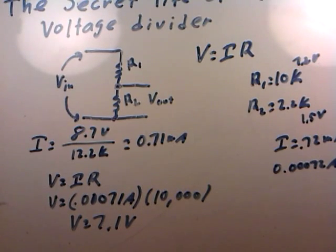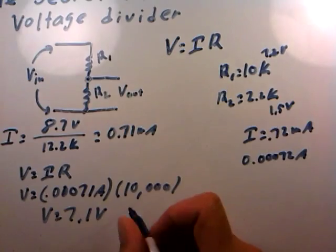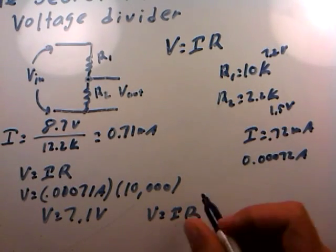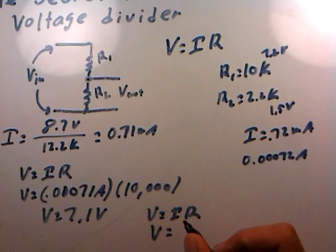Likewise, the voltage in the other resistor comes from the exact same analysis—another application of Ohm's law. V equals IR, so V equals the current again—the same current in that lower resistor, R2, which is 2.2k.